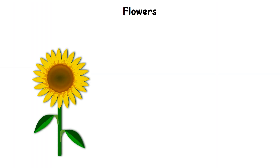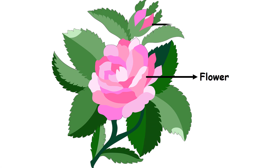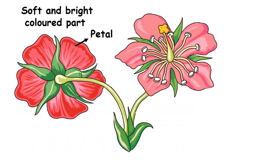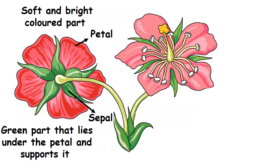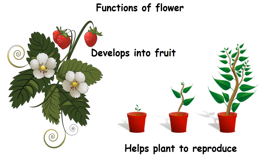Flowers. Flowers are the most beautiful part of the plant. They are of different shapes, sizes, colors and fragrance. A flower develops from the bud. The soft and brightly colored part of a flower is called a petal. The green part that lies under the petal and supports it is called a sepal. The middle of the flower has two parts called the stamen and pistil. Flowers develop into fruit and help the plant to reproduce.